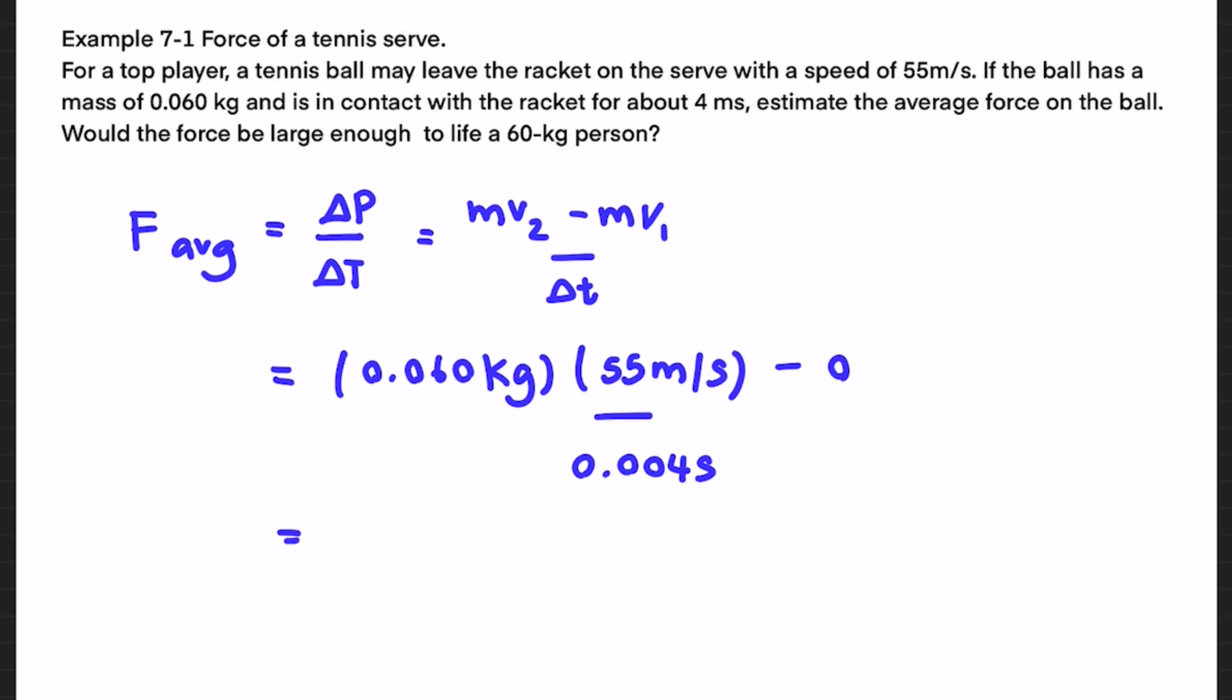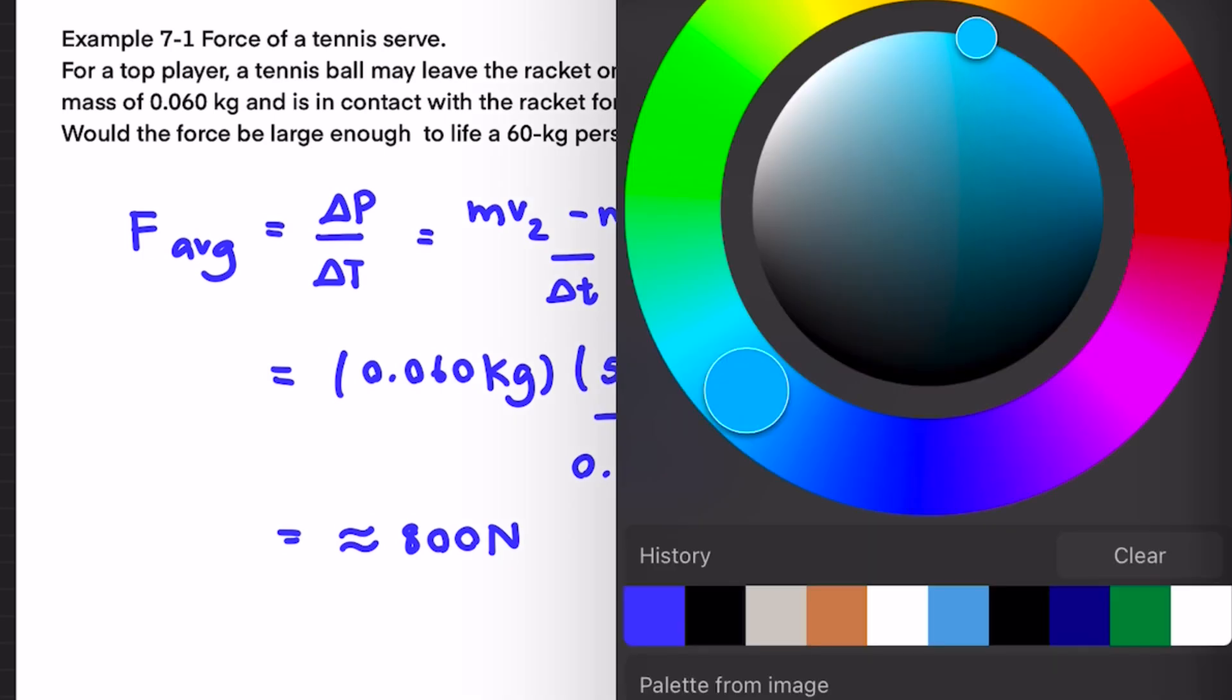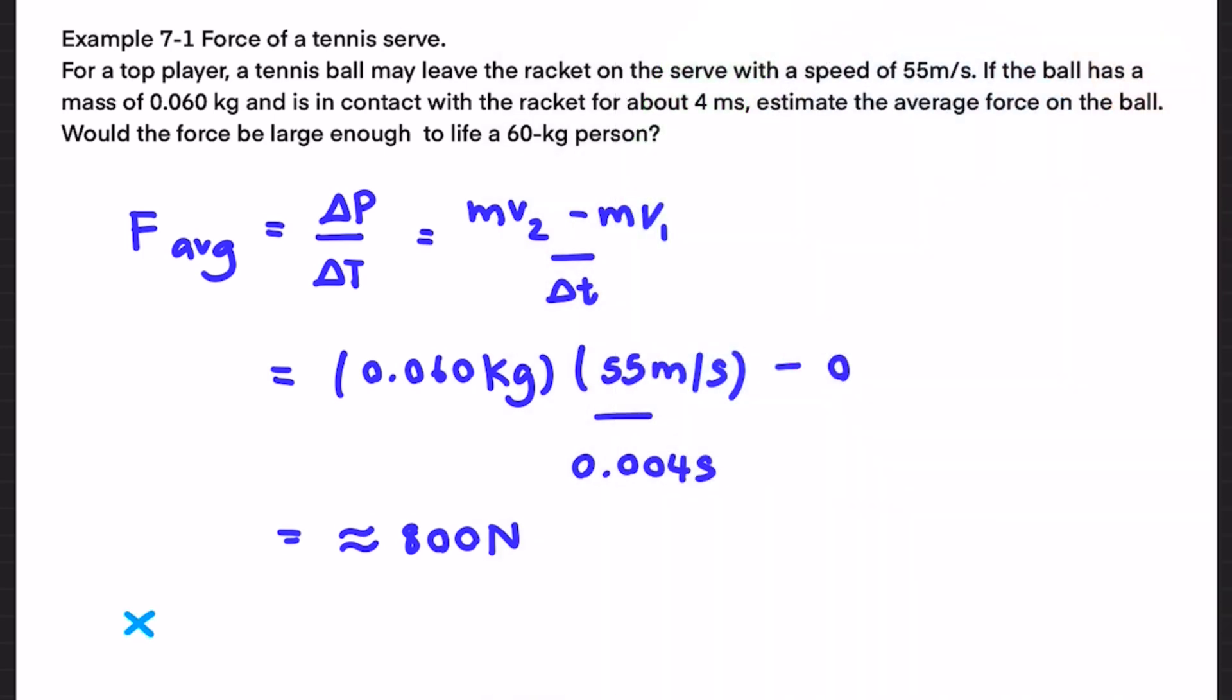But to know if it would be large enough for a 60 kilo person, we're just going to use the formula of mg where m represents the mass of a person of 60 kilograms and g is the earth gravity, so it's 9.8, and after we calculate we will get around 600 newtons.